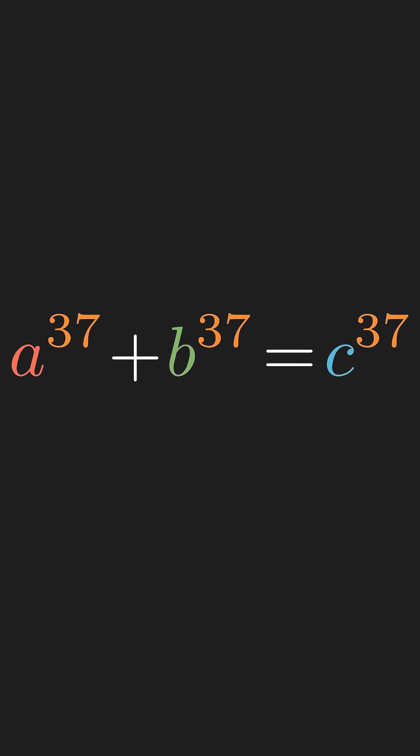So there was something special about this 36-dimensional number system that caused the proof to fail. This marked the birth of what we now call ring theory, the study of different number systems and their properties.